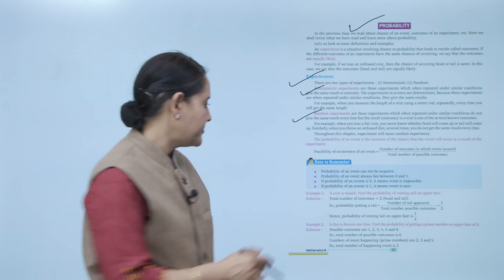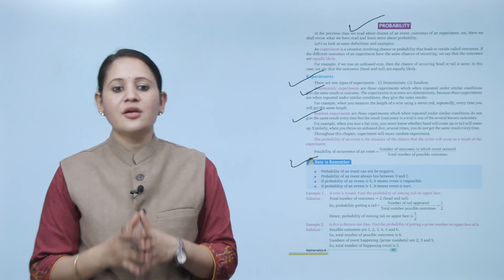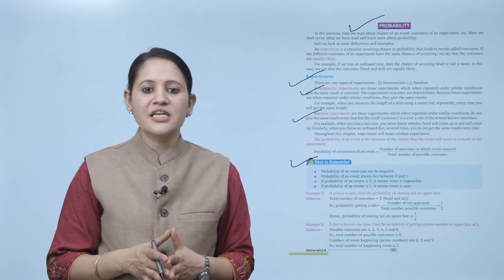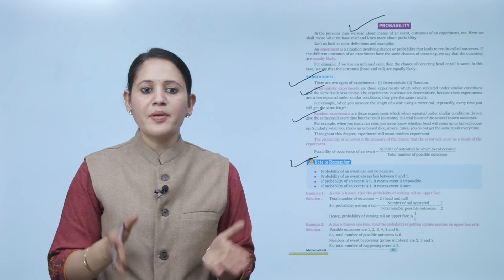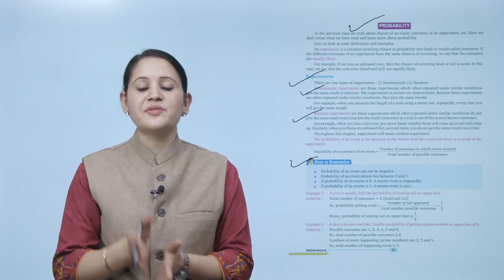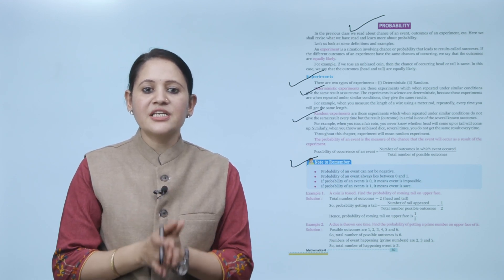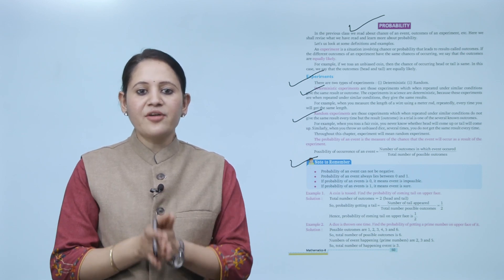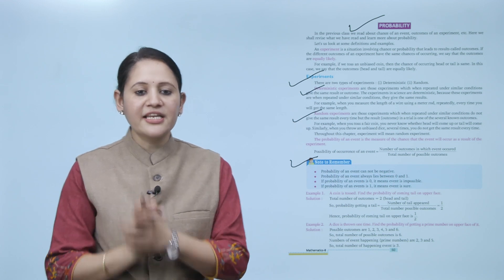Probability of occurrence of an event = (number of outcomes in which event occurs) / (total number of possible outcomes). Note to remember: probability of an event cannot be negative; it always lies between 0 and 1. If probability is 0, the event is impossible. If probability is 1, the event is certain.